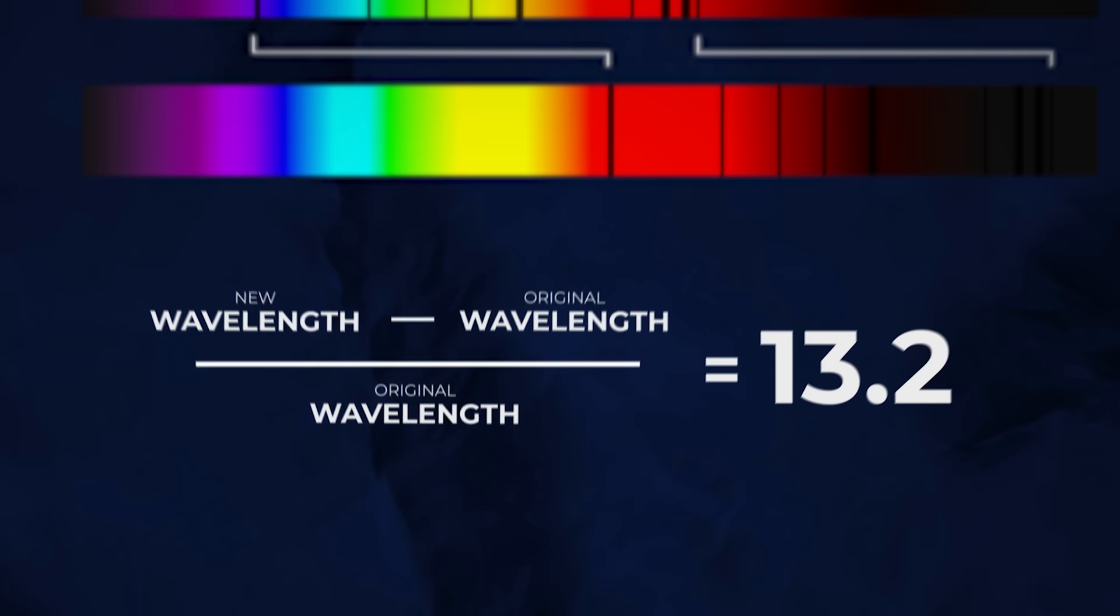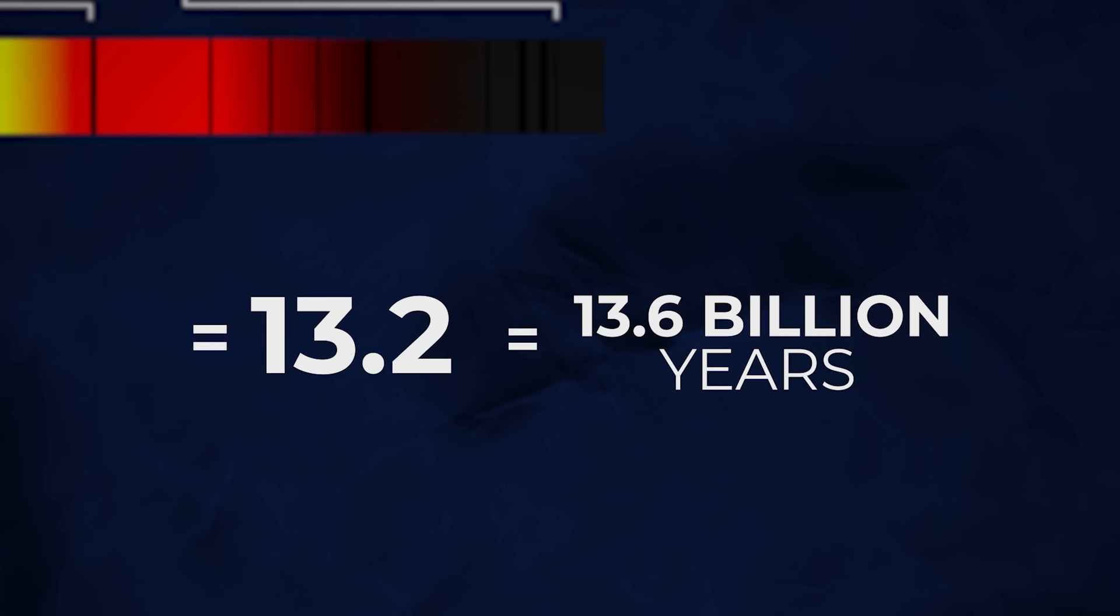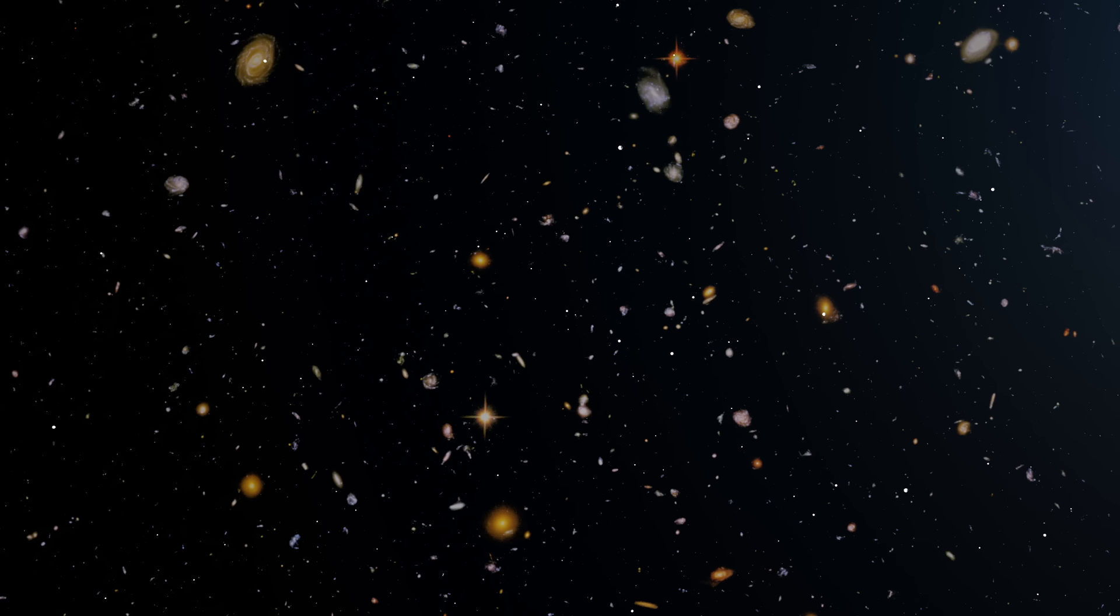This alone doesn't tell us much, but after some complex calculations that are too long for this video, we can arrive at the travel time. This is how long the light we see has been traveling through space to get to us. We can calculate this because we already know some important characteristics about the universe.